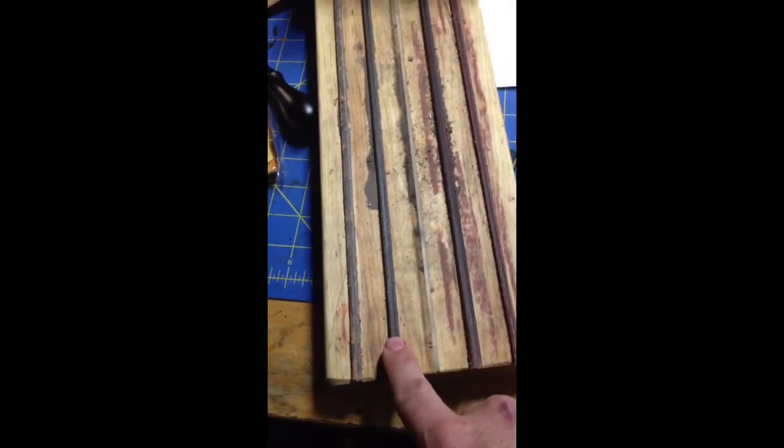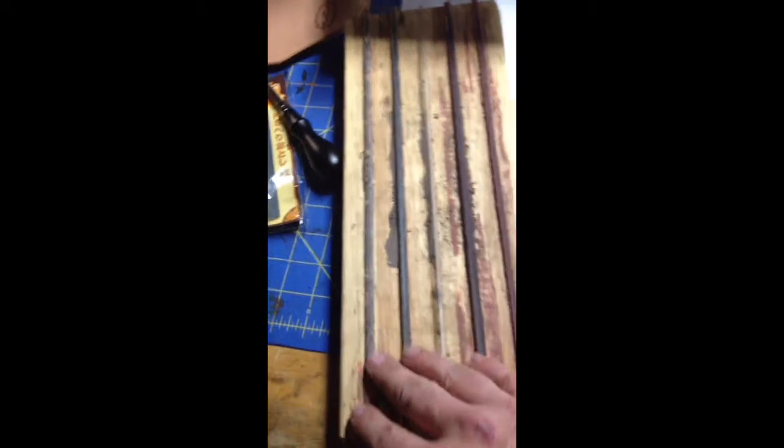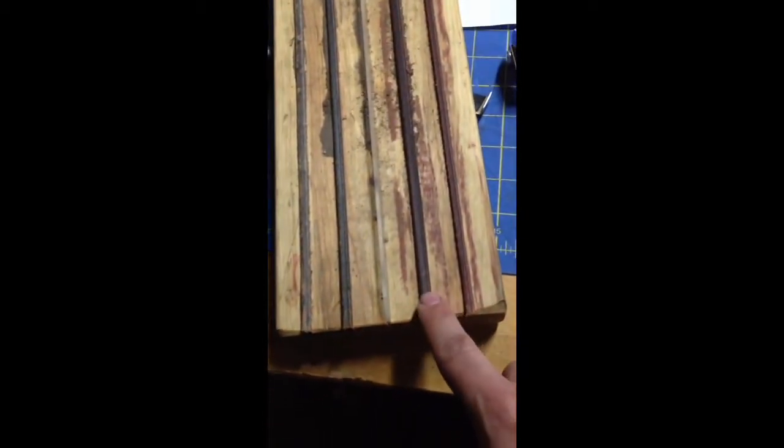On this side you just take some beeswax and you run it up and down the two strips of leather and then you can buy aluminum oxide and you can sprinkle it on that edge of leather. And then on this side you can put some of that red buffing compound and rub it into the leather.